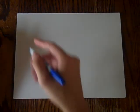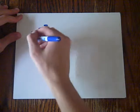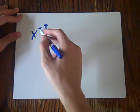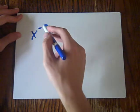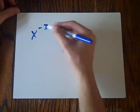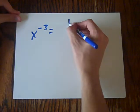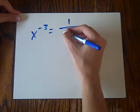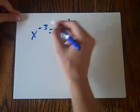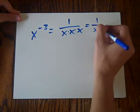Alright, so now we're going to be learning about x to the negative 3, or x to the negative cubed, or x to the power of negative 3, or whatever you want to call it, x to the negative 3. So x to the negative 3 means that it's 1 over x times x times x, because it's also equal to 1 over x cubed.